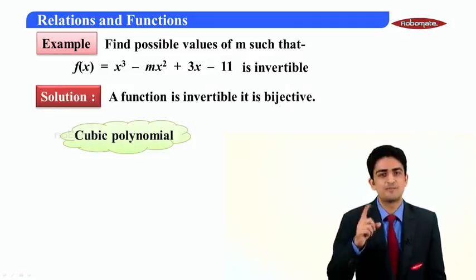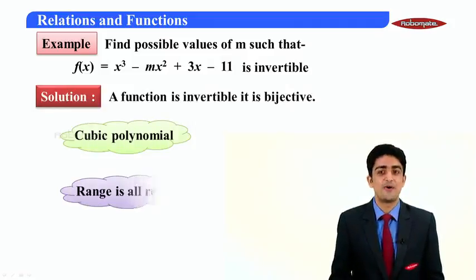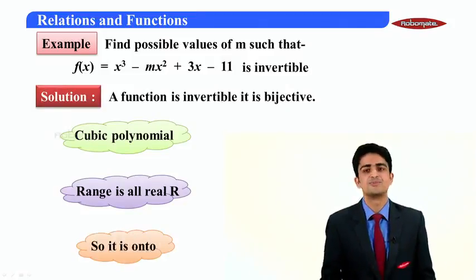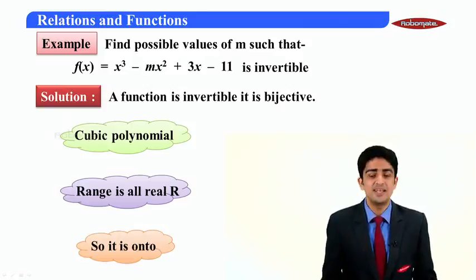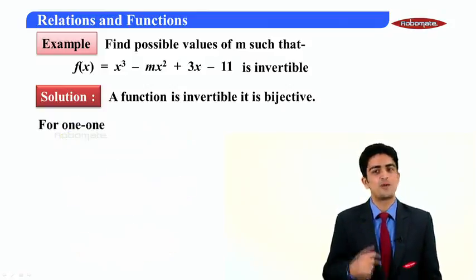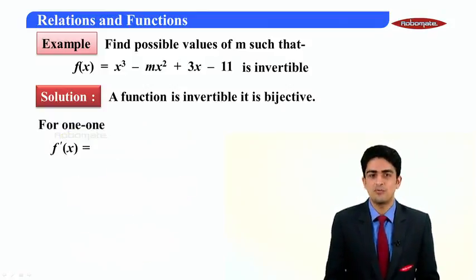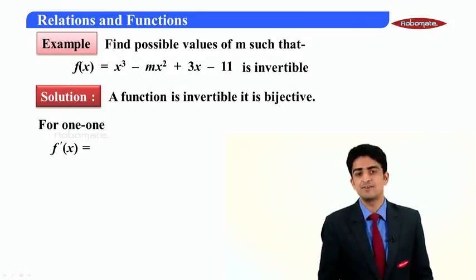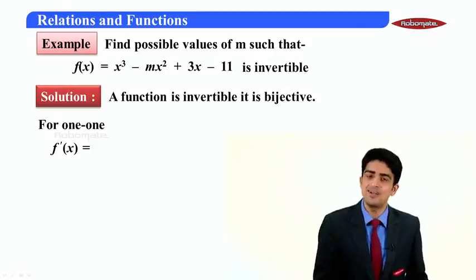Now cubic polynomial always has range real, I told you, so it is onto. So we only got to make sure that it is one-one. For one-one we know f'(x) should be either only positive (≥0) or only less than equal to zero.